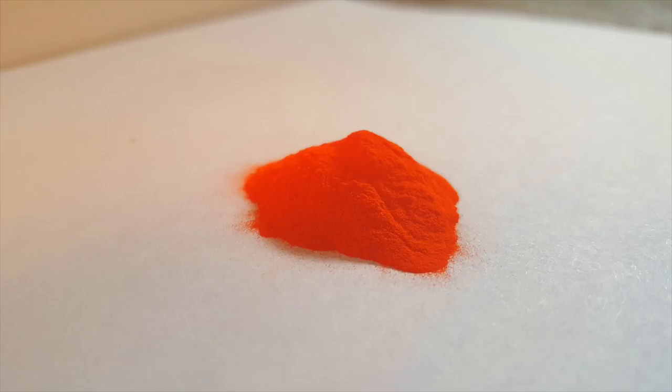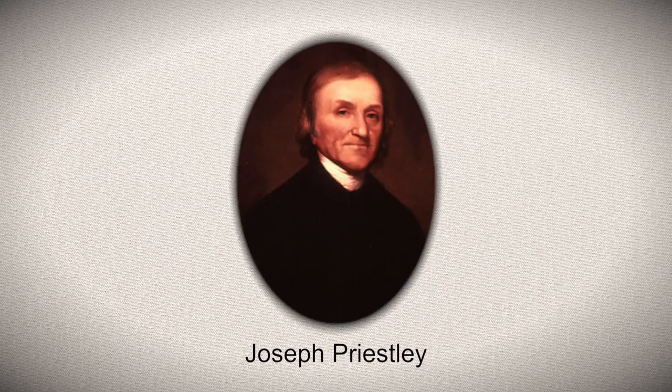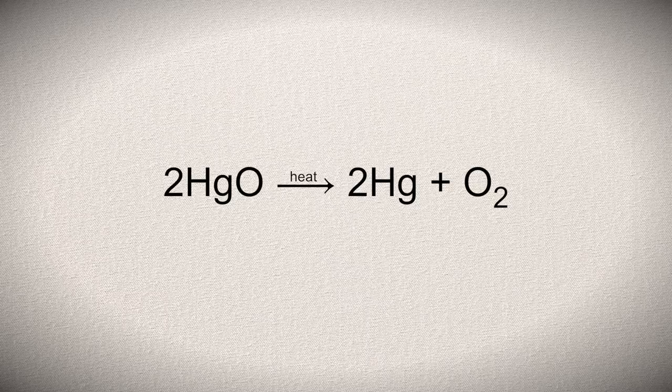Mercury(II) oxide, also known as mercuric oxide, is a nice looking orange-red powder at room temperature. Interestingly enough, this compound was used in 1774 by Joseph Priestley to discover the element oxygen. When heated, mercuric oxide decomposes into mercury liquid and oxygen gas.